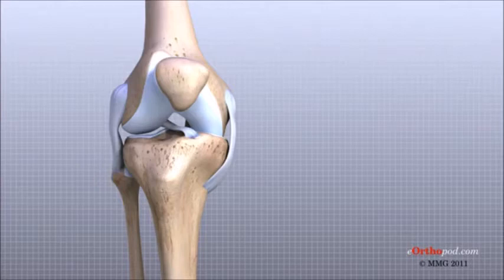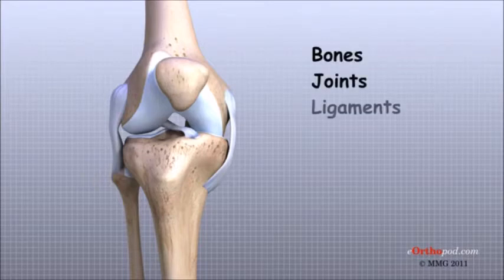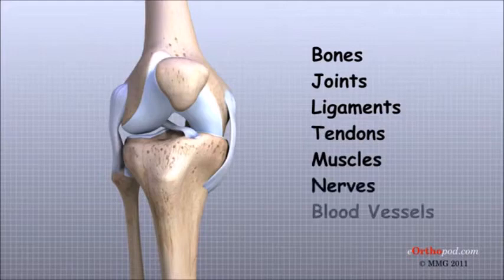The important structures of the knee can be divided into several categories. These include bones, joints, ligaments, tendons, muscles, nerves, and blood vessels.